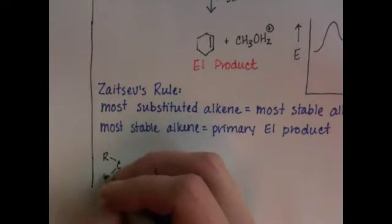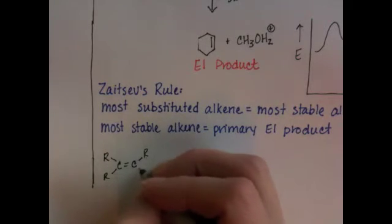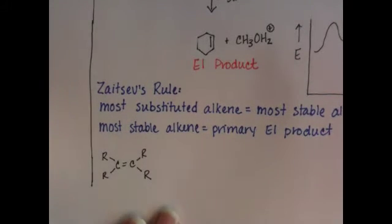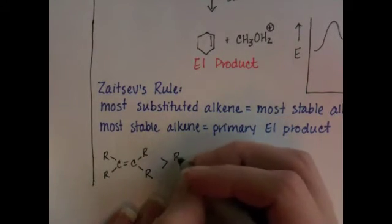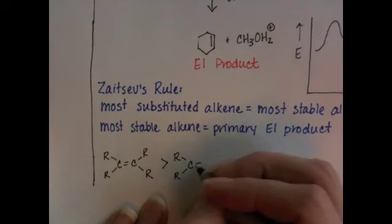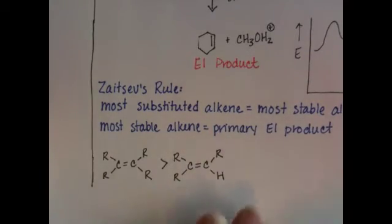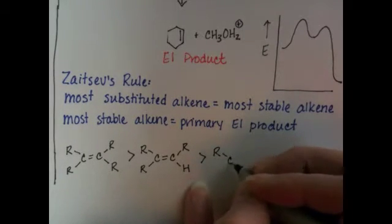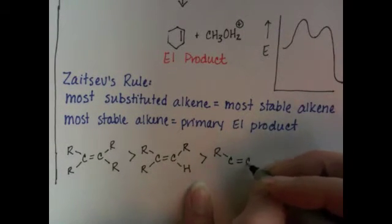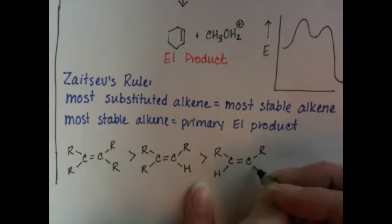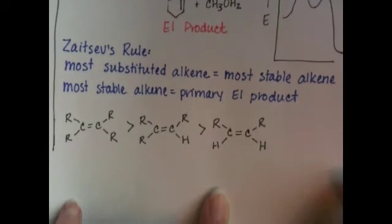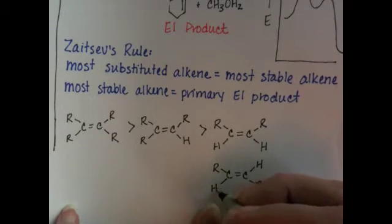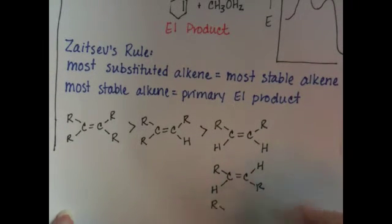An alkene that has four alkyl groups on it is the most stable. If you can ever create a tetrasubstituted alkene in an E1 reaction, you're good to go. The next most stable is going to be an alkene with three alkyl groups, like that. The next most stable is going to be an alkene with two alkyl groups, and there are three different ways that you can put two alkyl groups onto an alkene. Here's one of them. That would be cis, or you can have them trans, or you can have both alkyl groups on the same carbon.